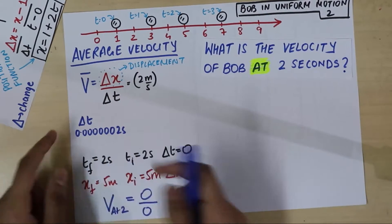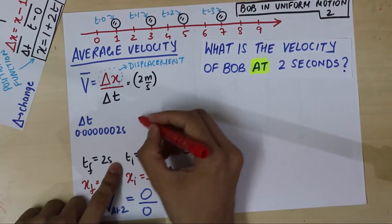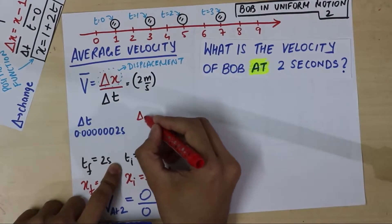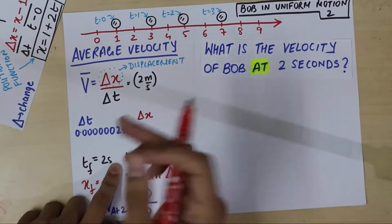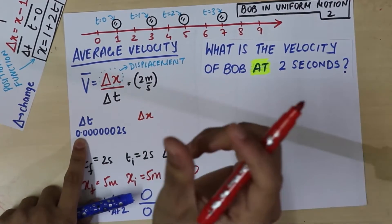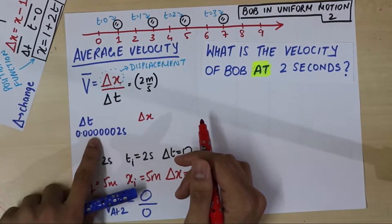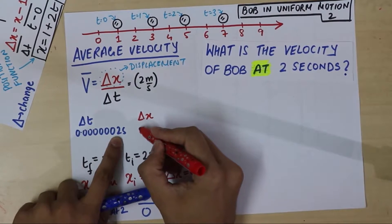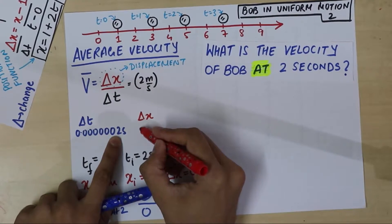And, what you will find, because it's uniform, is that the delta x in that extremely small moment in time, or interval of time, is, you will find, in that small interval, you get 0.0000004 meters.